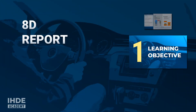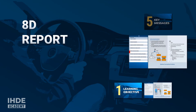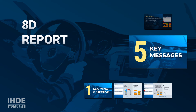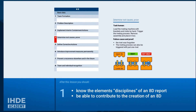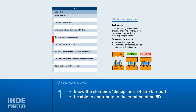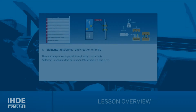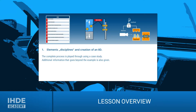In this lesson, the process for creating an 8D report and the individual elements are explained using a case study. This lesson has exactly one learning objective: by the end, you should know the elements of an 8D report and be able to contribute to its creation. This lesson has exactly one chapter, in which a simple case study is presented where a defect has occurred in a product and the 8D process is used to deal with this failure correctly and in a structured manner.